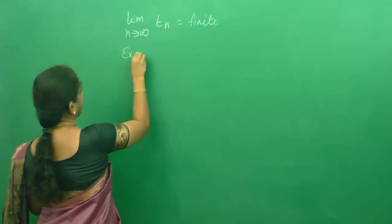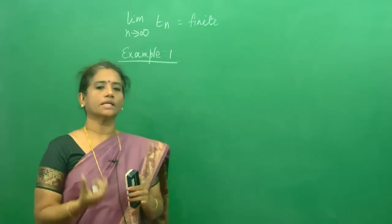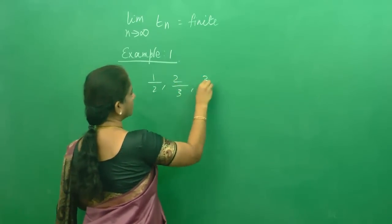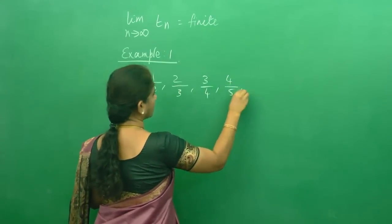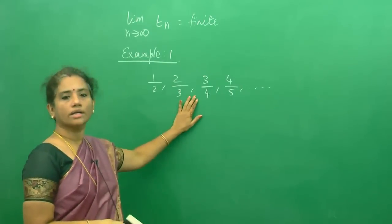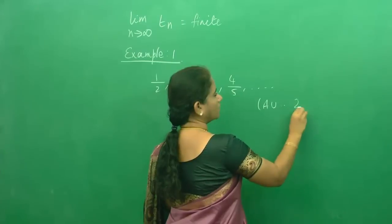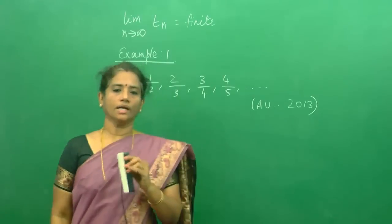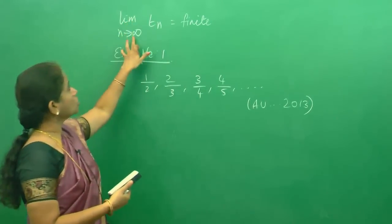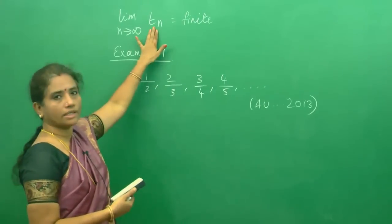We will do an example. We are going to check the convergence of the sequence: 1/2, 2/3, 3/4, 4/5, etc. So this is a sequence and you cannot judge whether it is increasing or decreasing just by looking at it. This question has come in the Anna University latest paper. Our aim is to check whether the limit as n tends to infinity of Tn is finite or not.